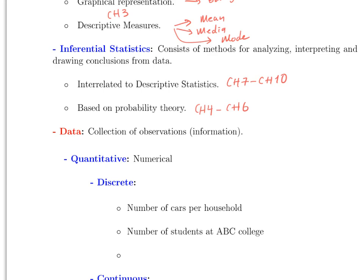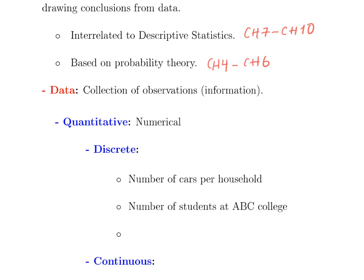Data is just a collection of observations or information we'll be working with. It could be anything we're interested in, like the height of people, the salary of people, or the eye color of people. Data is technically divided into two types: it's either quantitative or qualitative.